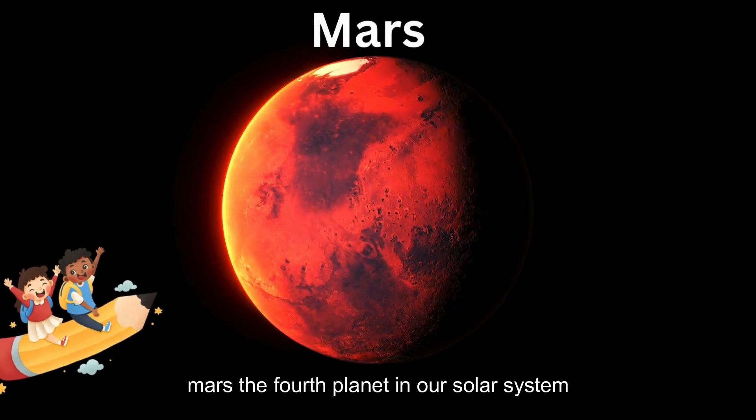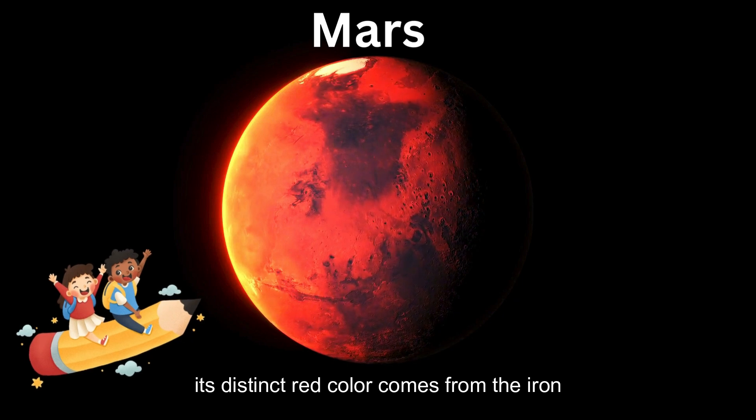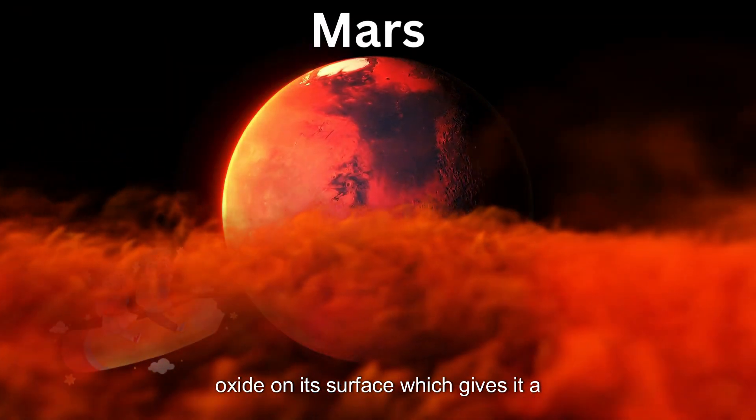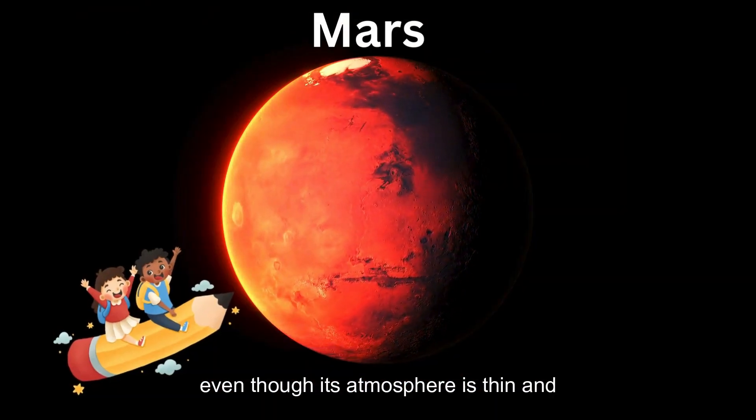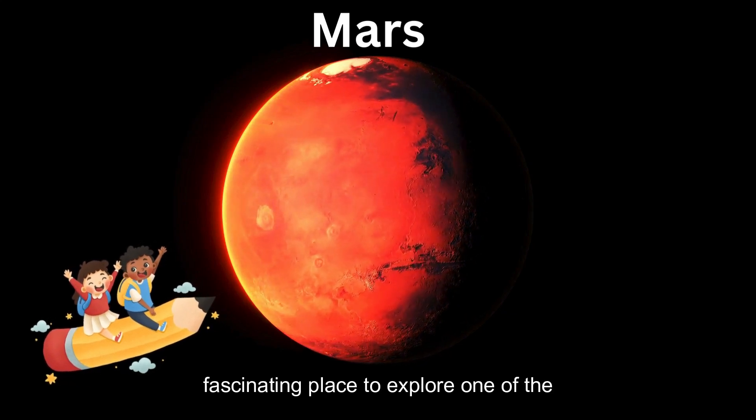Mars, the fourth planet in our solar system, is pretty cool. Its distinct red color comes from the iron oxide on its surface, which gives it a unique look. Even though its atmosphere is thin and mostly made of carbon dioxide, it's still a fascinating place to explore.